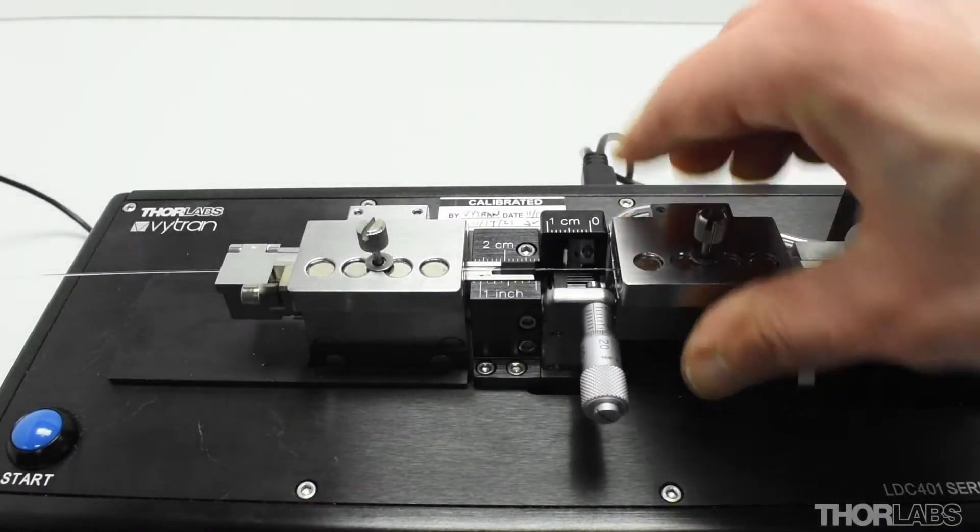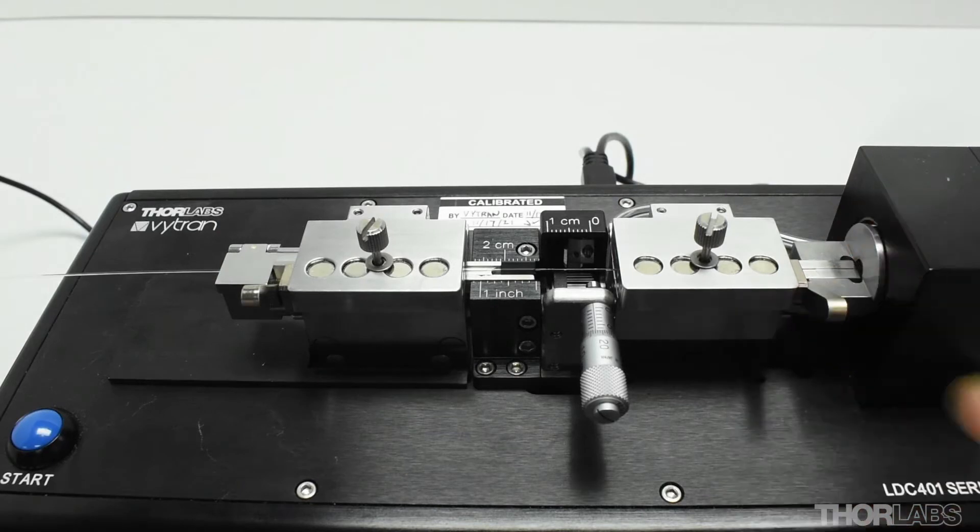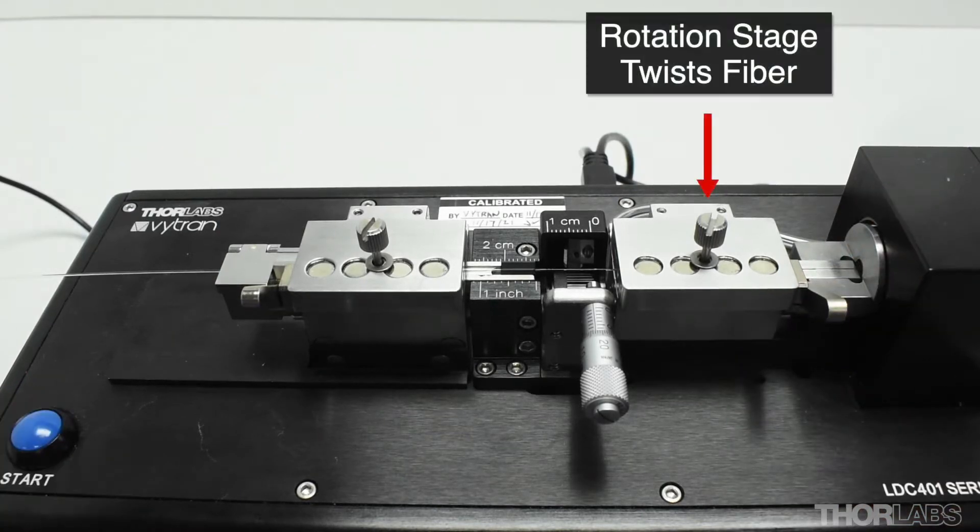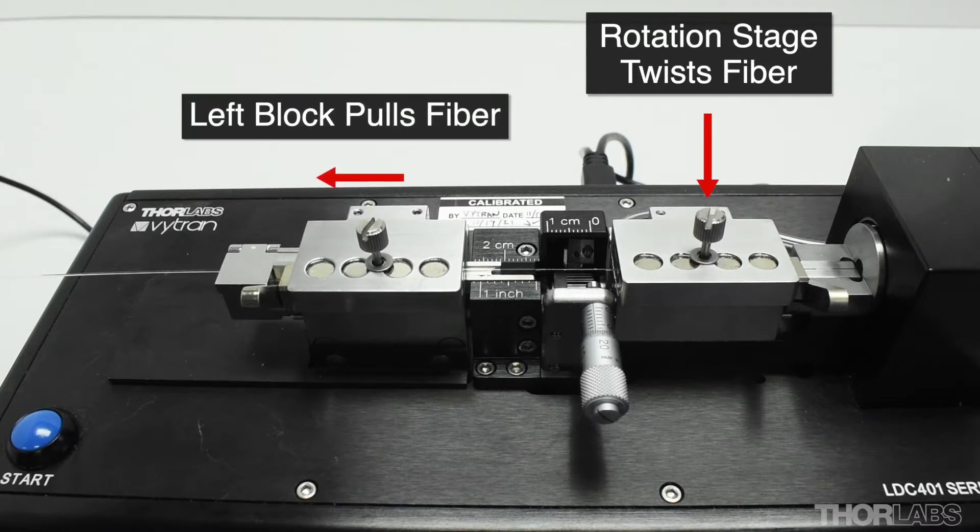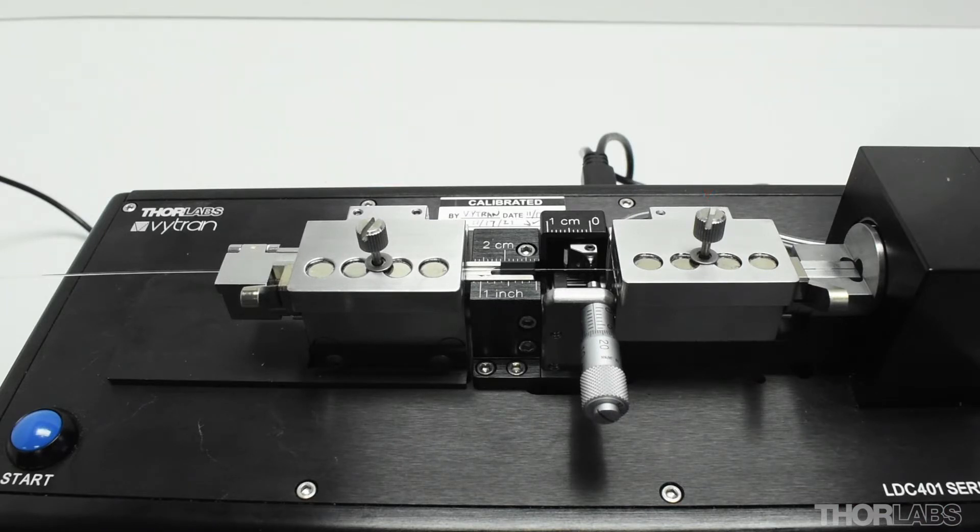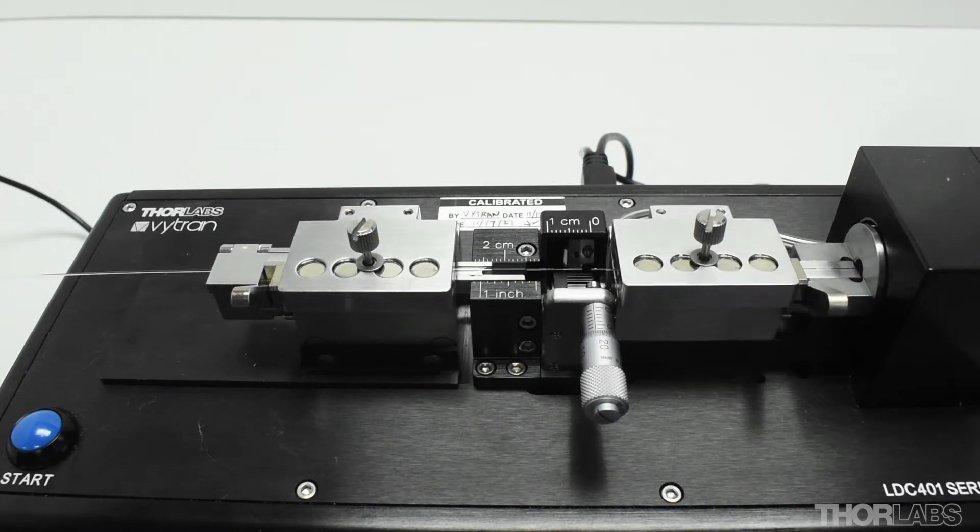The cleavers use a tension and scribe technique. A rotational stage on this cleaver also twists the fiber before it is pulled to the cleave tension. It is this twist that applies torsion to the fiber and produces an angled rather than a flat cleave.